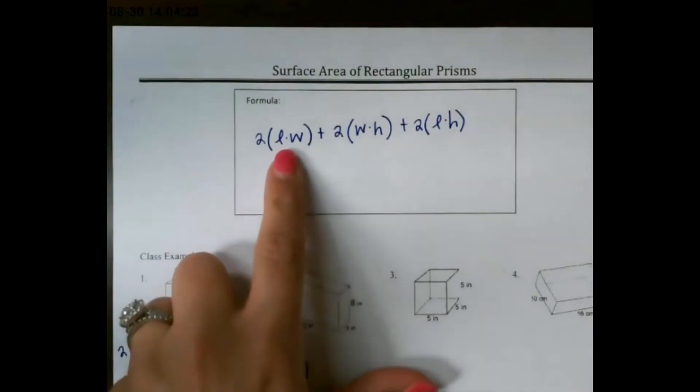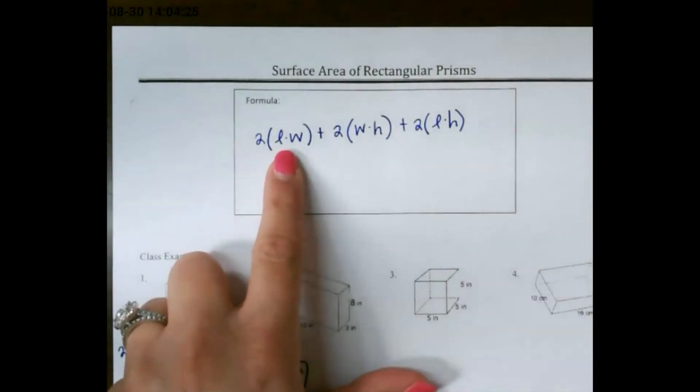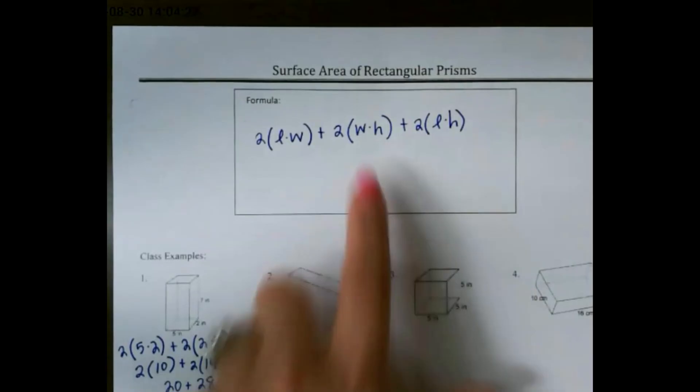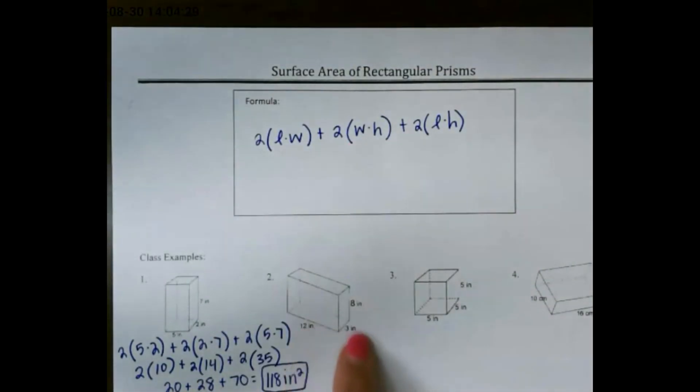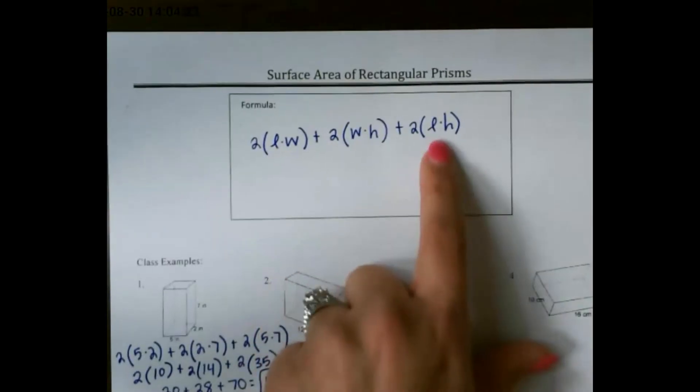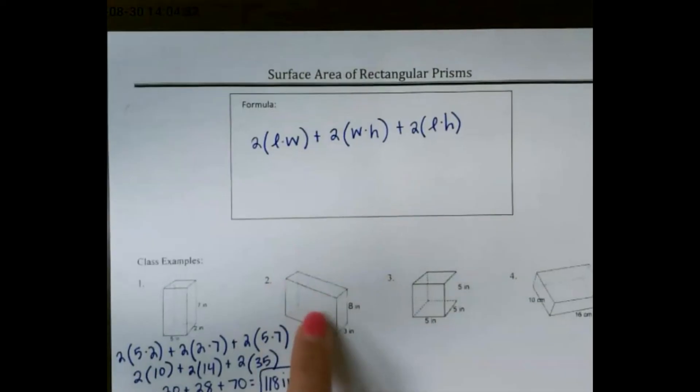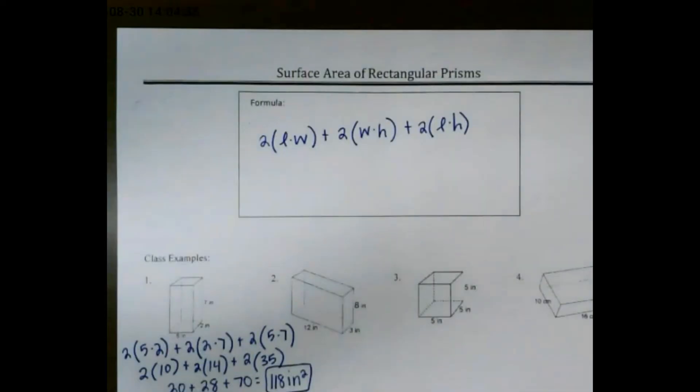So as a review, our formula is 2 of length times width, which would give you the top and the bottom of your shape, 2 of width times height, which would give you the sides, and then 2 of length times height, which would give you the front and the back of your shape. Thank you.